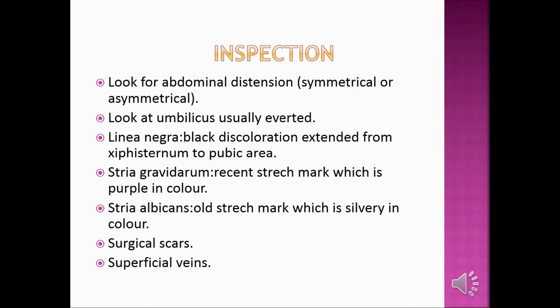On abdominal inspection, look for abdominal distension — symmetrical or asymmetrical. Look at the umbilicus, which is usually inverted. Note the linea nigra — a black discoloration extending from the sternum to the pubic area. Observe stria gravidarum — recent stretch marks, purple in color — as well as stria albicans — old stretch marks, silvery in color — surgical scars, and superficial veins.